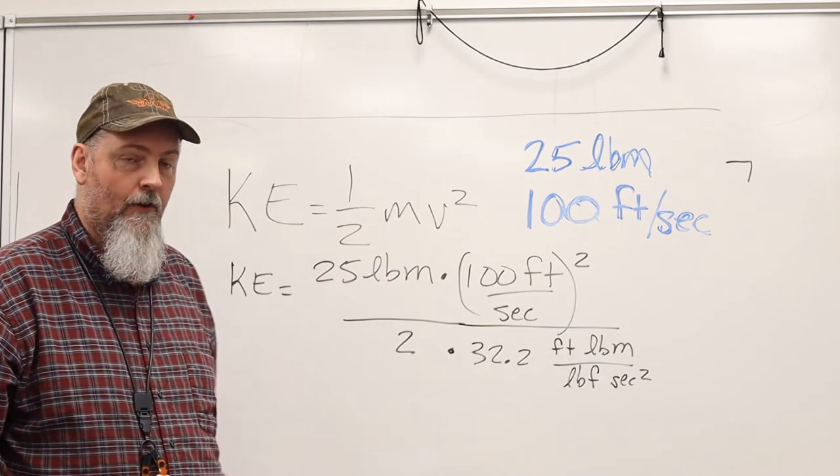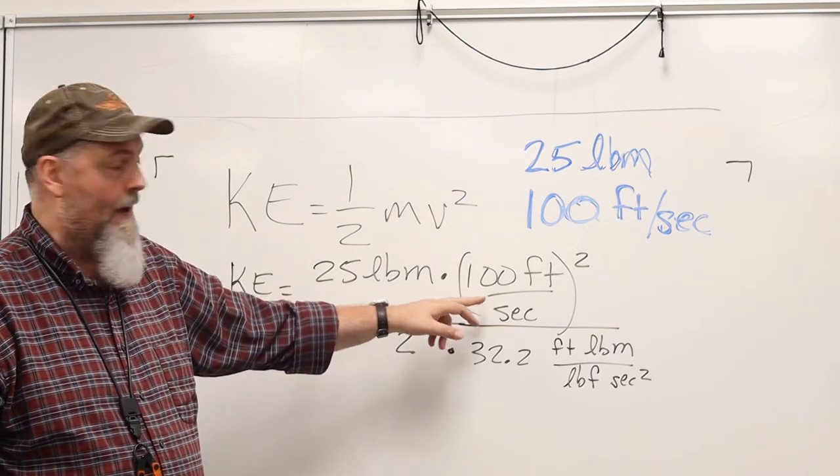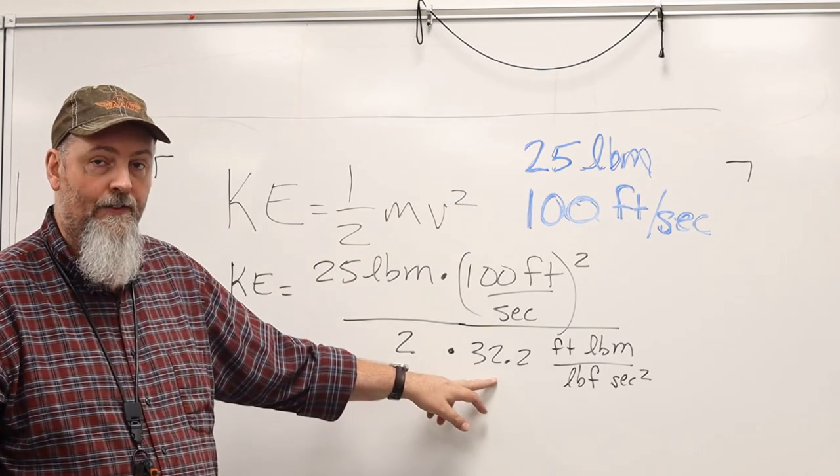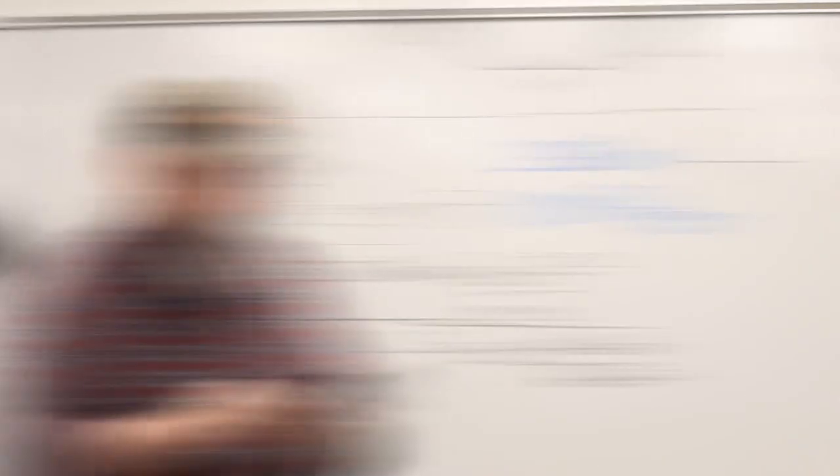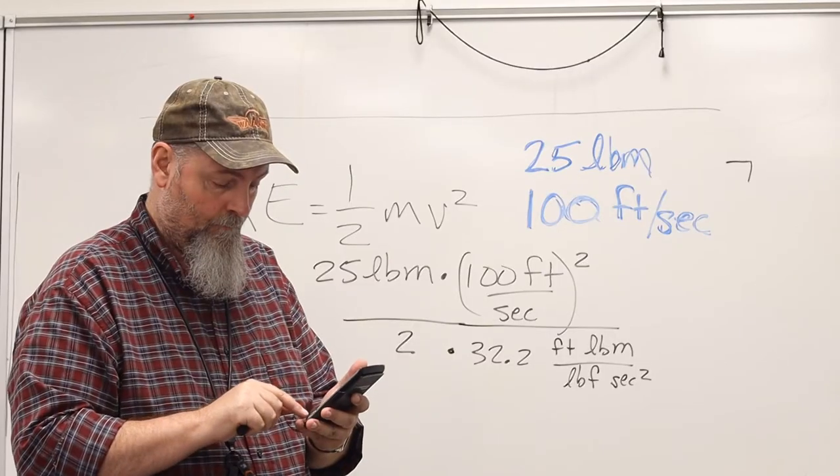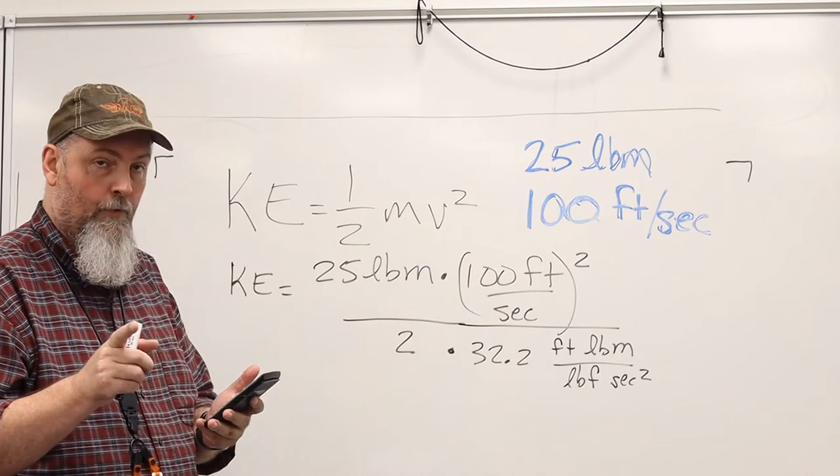Now I can solve this. 2 times 10,000 divided by 64.4. 3,000 something.